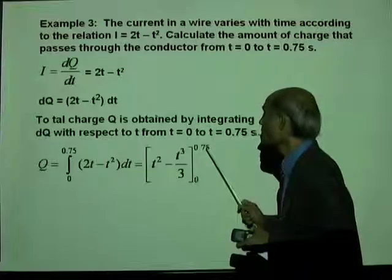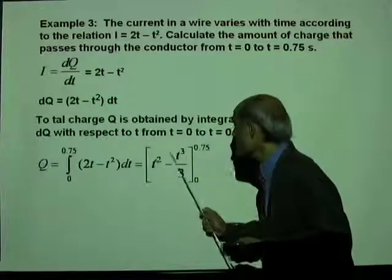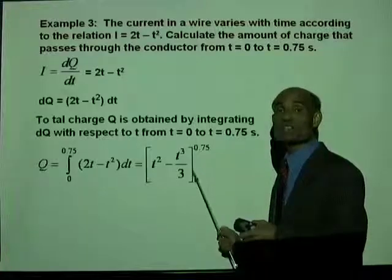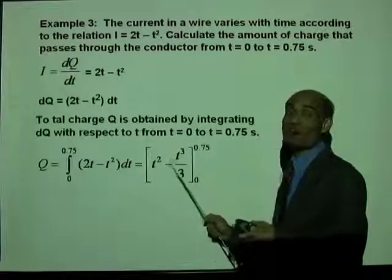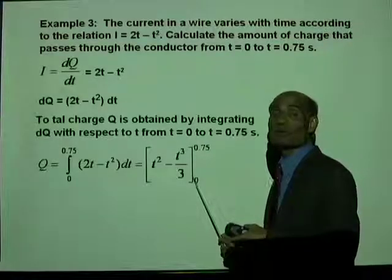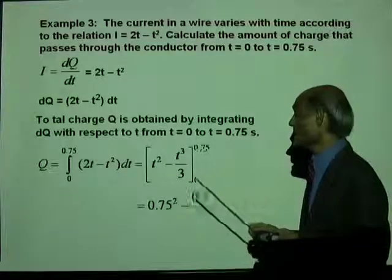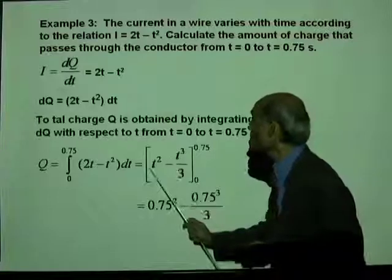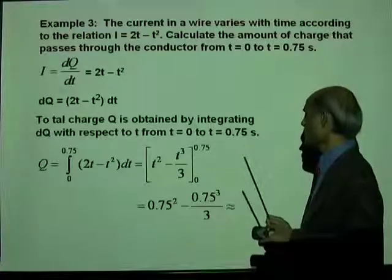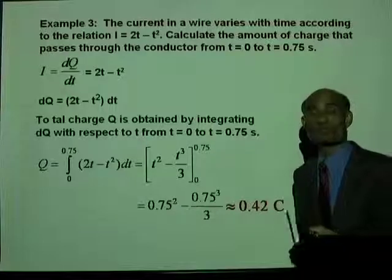With lower limit zero and upper limit 0.75, both terms vanish at T equal to zero, so we only evaluate the upper limit. That gives 0.75 squared minus 0.75 cubed over three, which is approximately 0.42 coulombs.